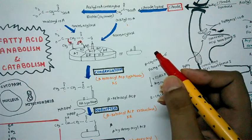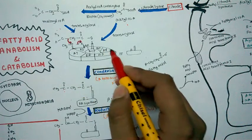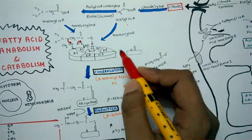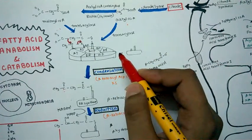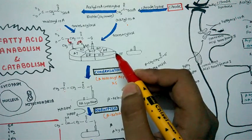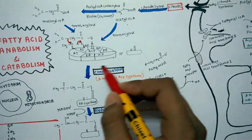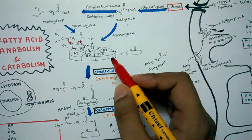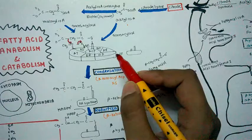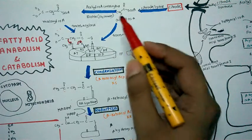The enzymes for fatty acid anabolism are not isolated enzymes — there is a huge complex called the fatty acid synthetase complex. This complex is comprised of seven domains and seven active sites. In E. coli, multiple polypeptides are responsible for this complex, but in humans one polypeptide is present containing all seven domains.